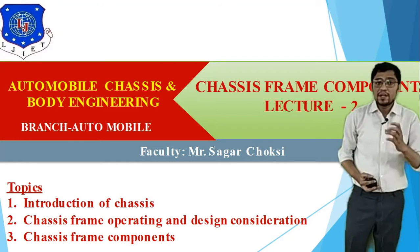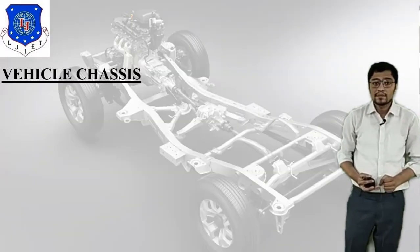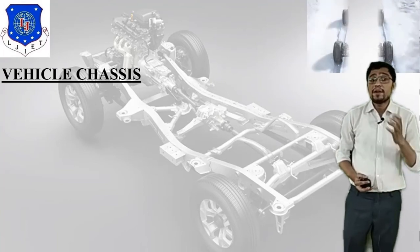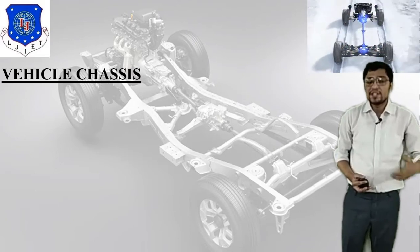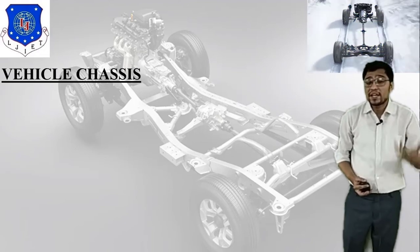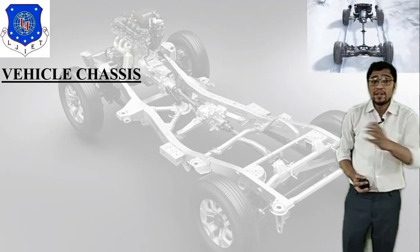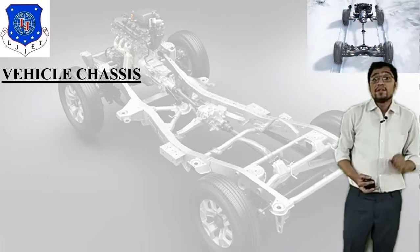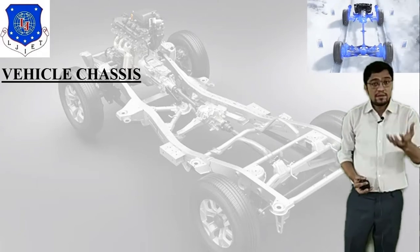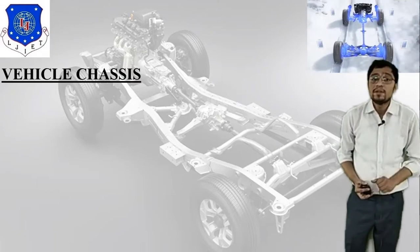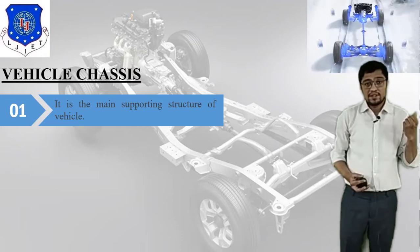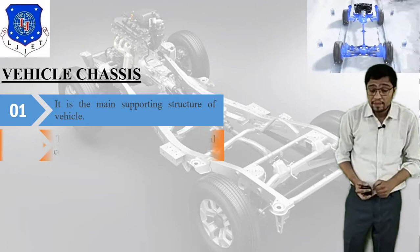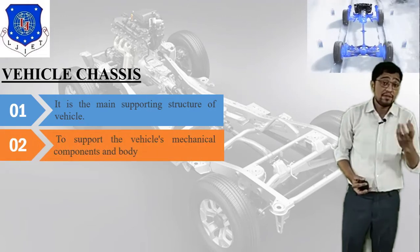Lecture number two is related to chassis frame. The first important question is: what do you understand by vehicle chassis? In this particular video you can see there is one propeller shaft connected with the engine and clutch, with many types of mechanical joints, and it is also connected with four wheels. The structure alone is called the frame, but when you connect the four wheels, engine, and clutch, this assembly is called the vehicle chassis. It is the main supporting structure of the vehicle.